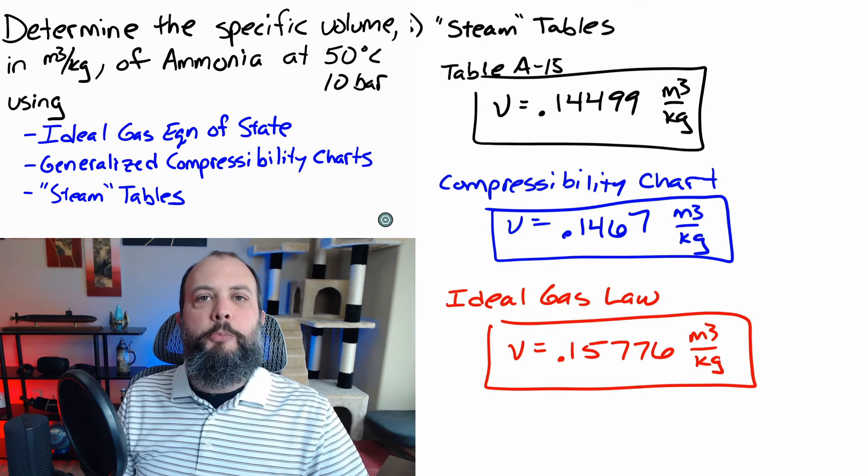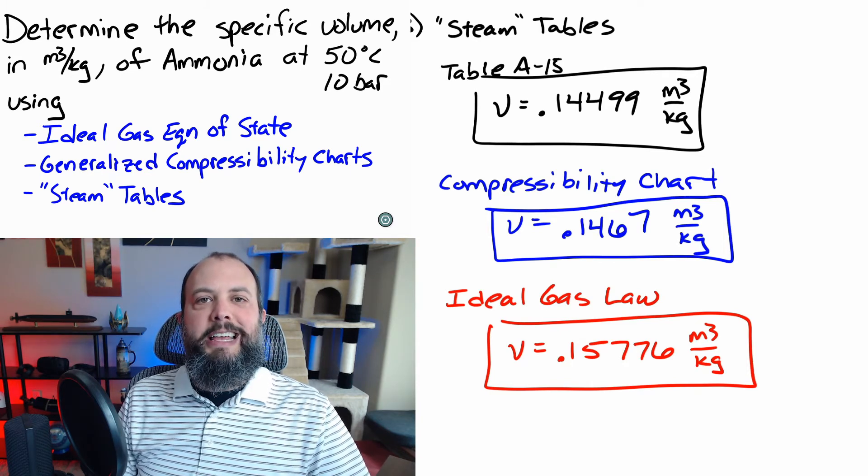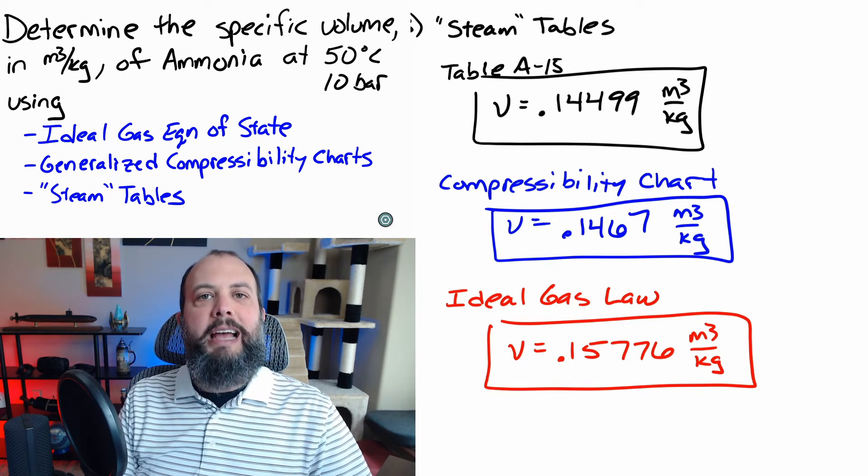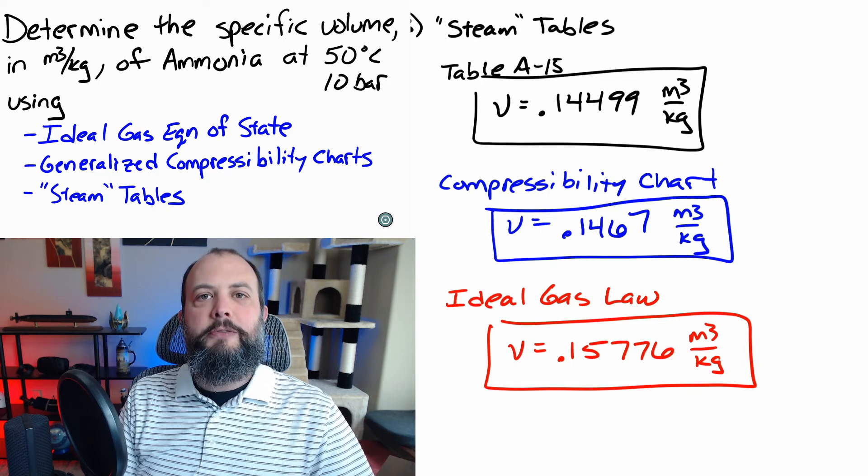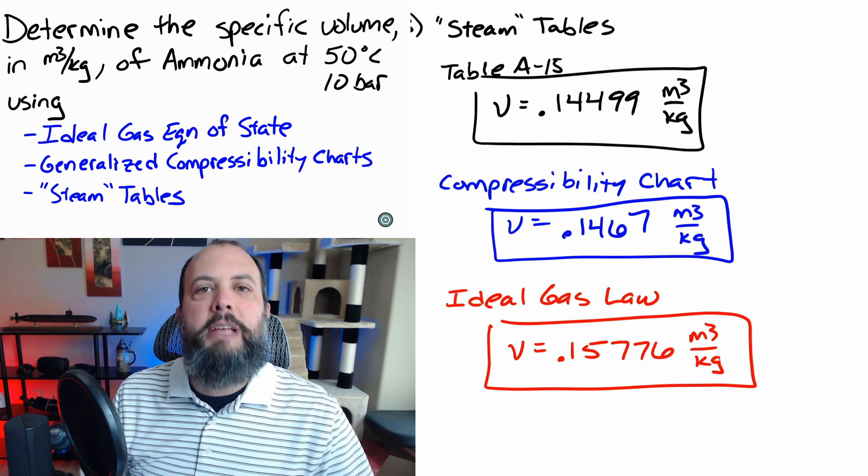And then more complex gases like ammonia or air may behave like ideal gases only in very narrow ranges. And that's the benefit of the compressibility chart. This applies a correction factor to the ideal gas law to account for those differences in behavior from the ideal gas.